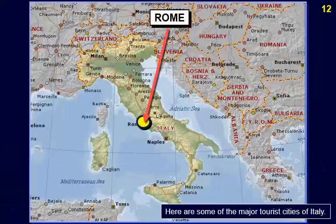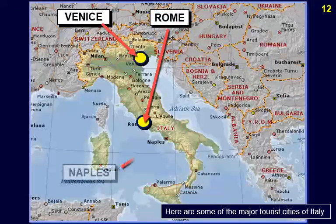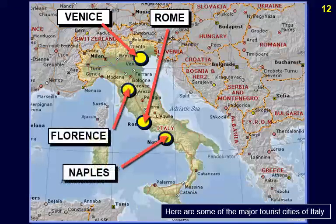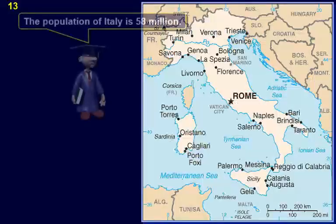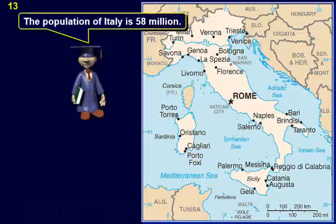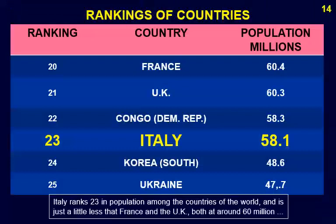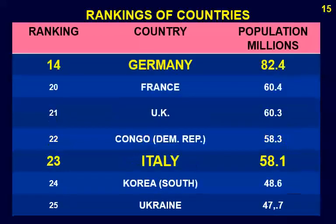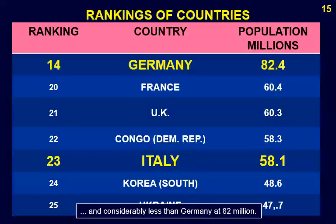Here are some of the major tourist cities of Italy. The population of Italy is 58 million. Italy ranks 23rd in population among the countries of the world, just a little less than France and the UK, both at around 60 million, and considerably less than Germany at 82 million.